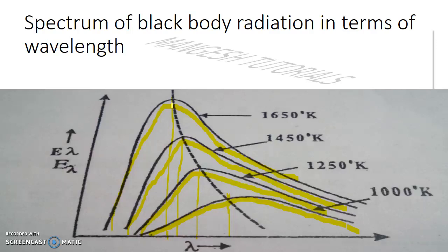Wien's displacement law can also be applied in other contexts — for example, explaining why a piece of metal heated over a flame changes color from dull red to yellow-red and finally to white. These are some of the applications of the blackbody radiation spectrum in terms of wavelength.